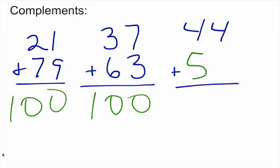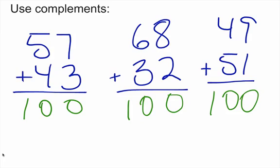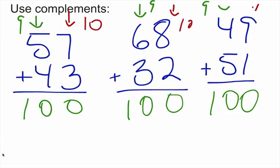The answer is 56 — 44 plus 56 gives you 100. How do we know this? The digits on the left are going to equal 9. The digits on the right are going to equal 10. Numbers to the right equal 10, numbers to the left equal 9, and that's going to give you your 100.